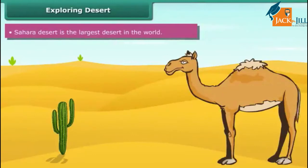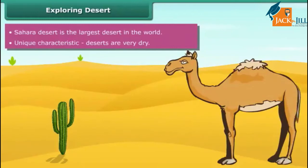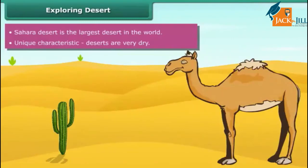Did you know that the Sahara Desert is the largest desert in the world? It is located in Africa. Deserts have a unique characteristic of being dry. They are hot and dry due to a high rate of evaporation and limited rainfall. Plants and animals living in deserts have modified features to survive in such extreme conditions.